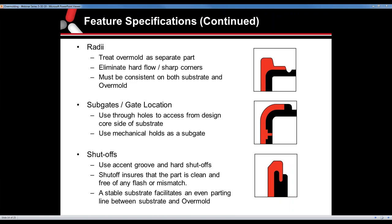Question: Can you perform a process on a substrate prior to overmolding, such as screen printing? You could, but depending on where that screen printing is — if it's in an area of shutoff — you're going to have the tool closing on that surface, which could affect it. So yes, it is possible, but again it's just going to depend on what's being done.